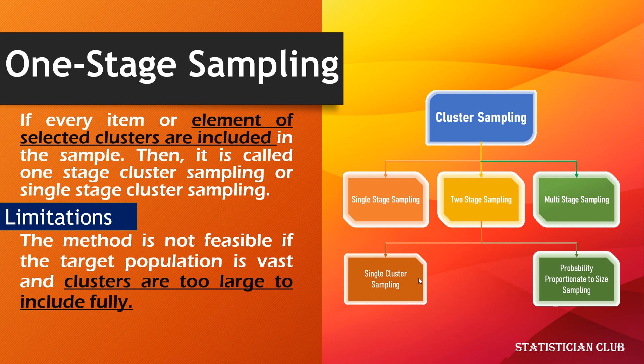The two sub-types of two-stage sampling we will discuss in my next upcoming video. So what is single-stage sampling? If every element or item of selected clusters is included in the sample, then it is called one-stage cluster sampling or single-stage cluster sampling.